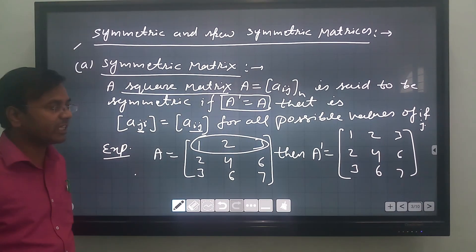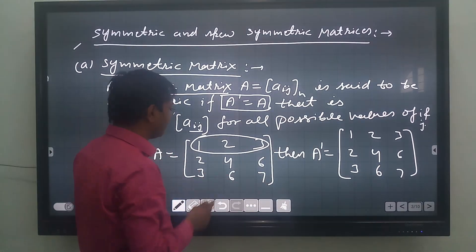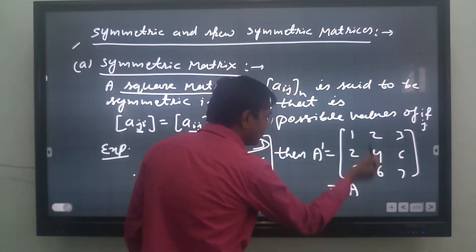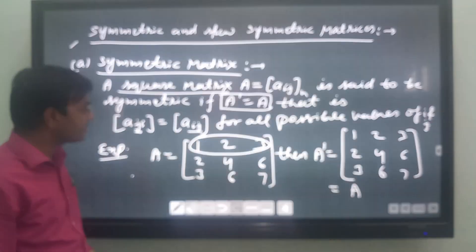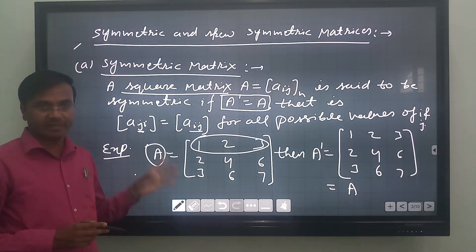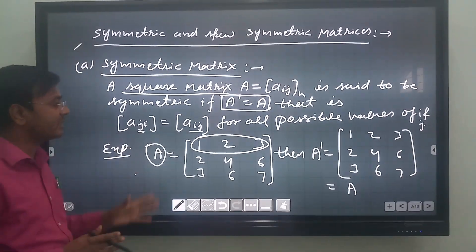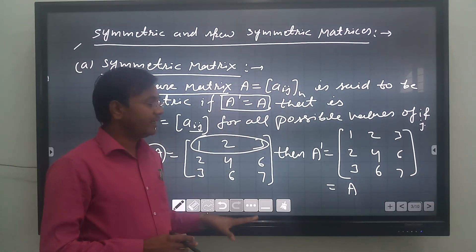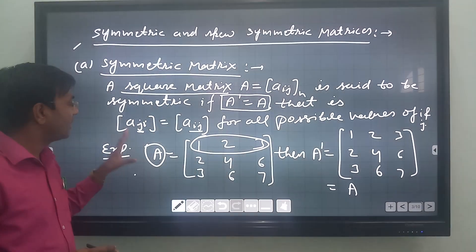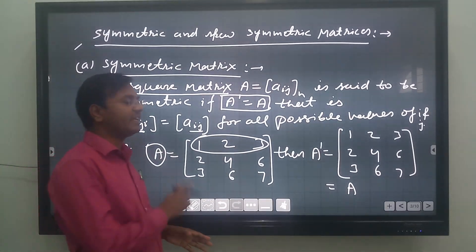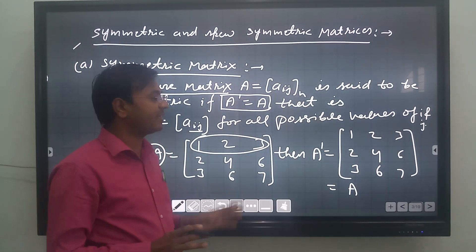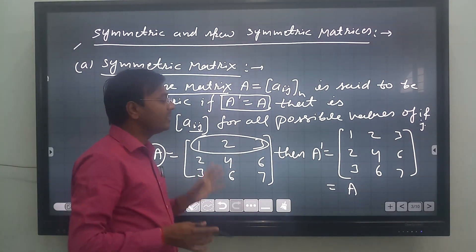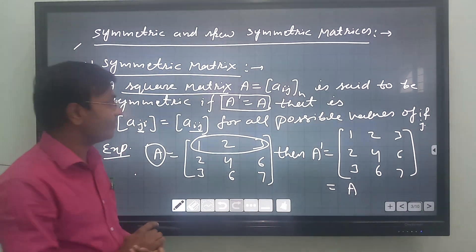Now check: A^T equals [[1,2,3],[2,4,6],[3,6,7]], which is the same as the given matrix A. It means A dash equals A, so the given matrix is a symmetric matrix. To verify whether any matrix is symmetric, we just need to find A transpose — if we get the same matrix back, then it is a symmetric matrix.